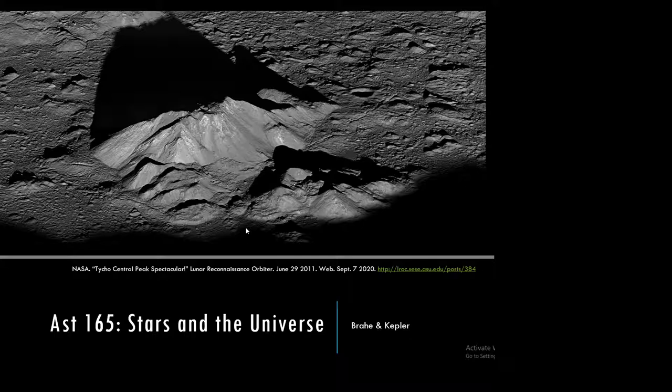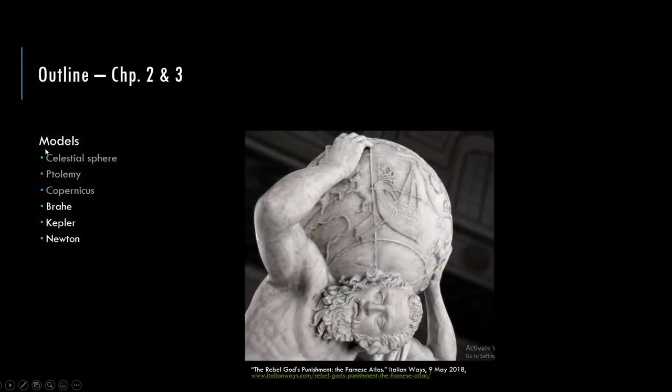We are continuing our progression of various models of the universe, starting with the celestial sphere from the ancient Greeks. We then moved into the Ptolemaic model around the first century CE, adding epicycles to explain retrograde motion. A thousand five hundred years later, observations of the maximum elongation of Venus and the phases of Venus conflict with the Ptolemaic model, forcing us to replace it completely with heliocentricism, generally credited to Copernicus.